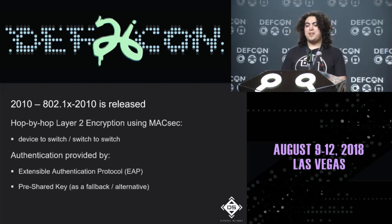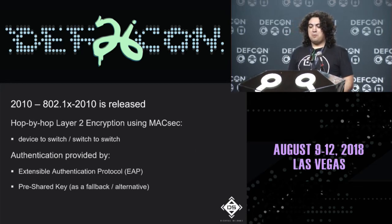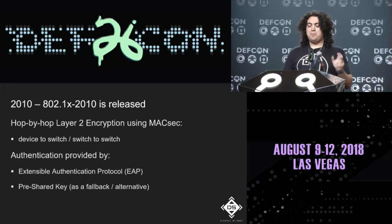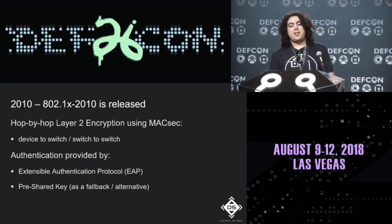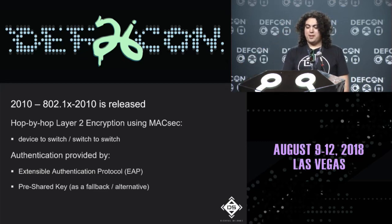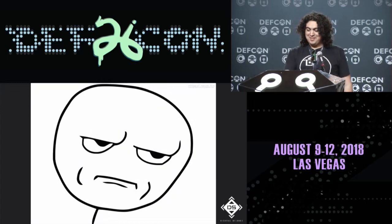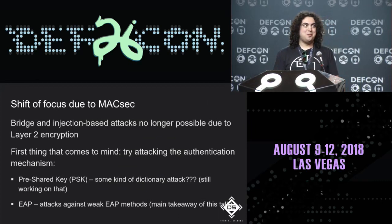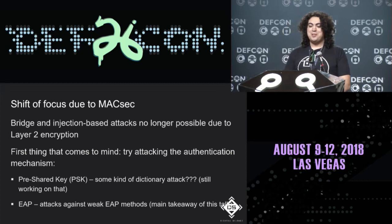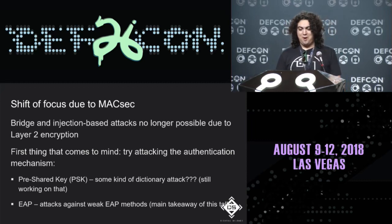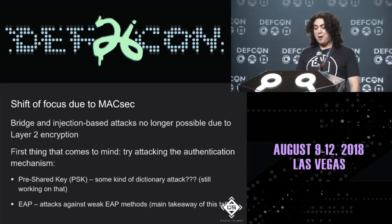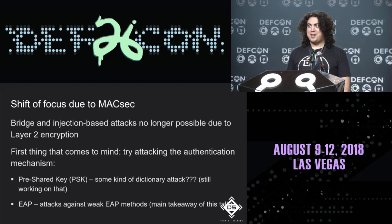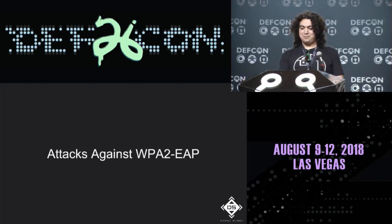Fast forward to 802.1X-2010: it similarly provides hop-by-hop layer 2 encryption using MACsec, with authentication via EAP or PSK fallback. The obvious hypothesis is to attack the authentication mechanism rather than MACsec itself. This talk focuses on attacks against weak EAP implementations. With PSK, a dictionary attack may be possible, but that's not covered here.